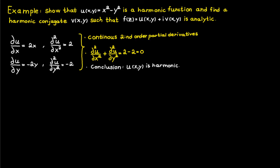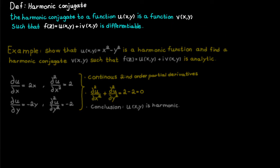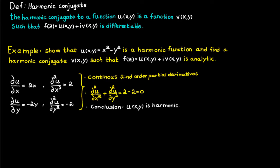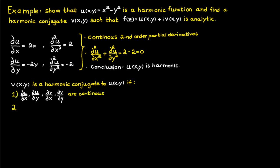The next step is to find a harmonic conjugate function v, which we can do from the definition. We need to create v such that f is differentiable. Therefore v is a harmonic conjugate to u if and only if the partial derivatives of u and v are continuous and the Cauchy-Riemann equations are satisfied.